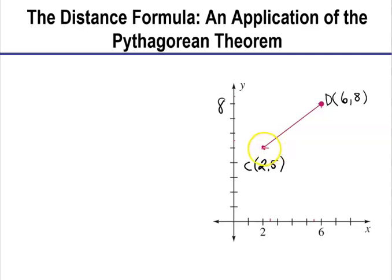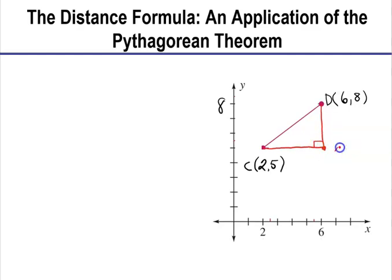I'm going to come over horizontally, like that, and then come down vertically. Now, what that did is it created a right triangle. This point right here, if I were to label it, we know that the x value is the same as D's x value because it's just right above it. So that would be the point (6, 5) — x is 6 and the y value is the same height as C, which is 5.